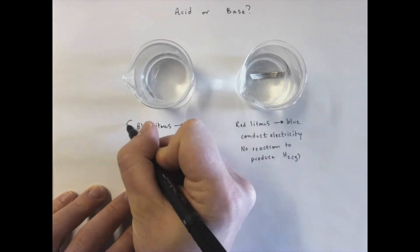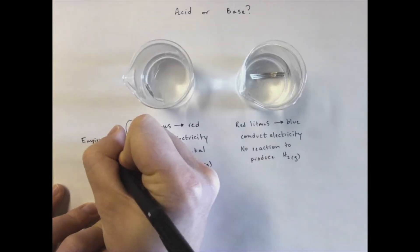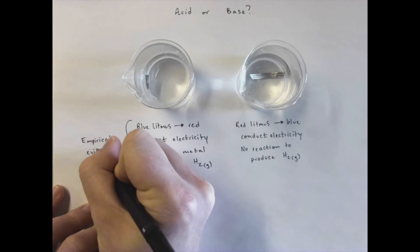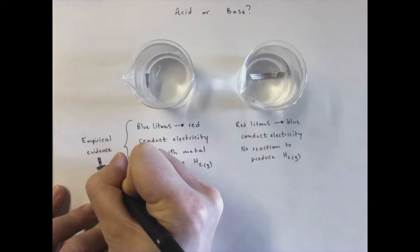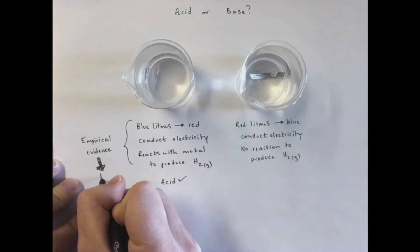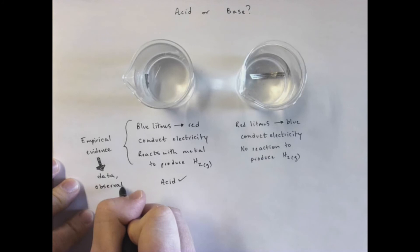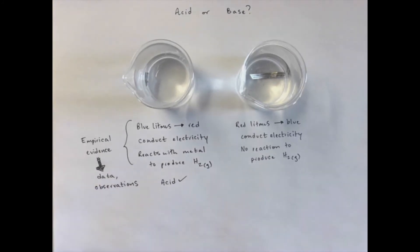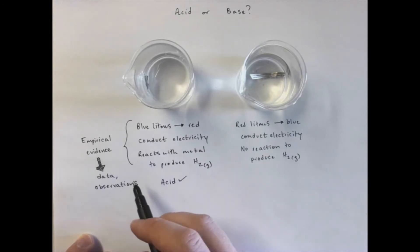So once again, this is all empirical evidence. And what this means is this is data. This is observations. These are things that we can measure and observe. So we start with observations and collect observations over a long period of time. And over a long period of time, people noticed that all acids tend to do this kind of stuff.